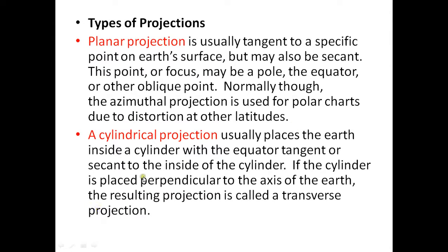The cylindrical coordinate system essentially places the whole Earth inside a cylinder, with the equator tangent or secant to the inside of the cylinder. If the cylinder is perpendicular to the Earth's axis, the resulting projection is called a transverse projection. If parallel, it is a normal projection, and if neither parallel nor perpendicular, it is called an oblique cylindrical projection.